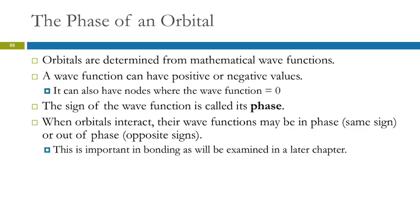When orbitals interact, their wave functions can be in phase or out of phase. They are waves, and they're going to interfere with each other just like light waves do and like those electron waves did in the electron diffraction experiment. So we're going to look at this in the next chapter a lot more.